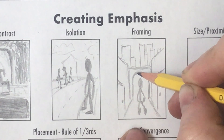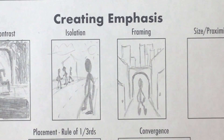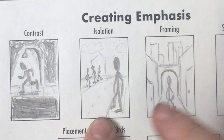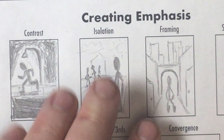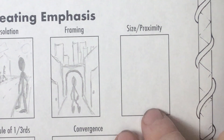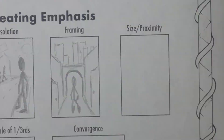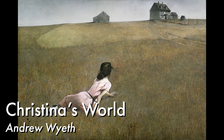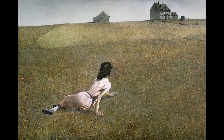Moving on to the next box — we're talking about size or proximity. We've kind of already seen that in the isolation example, where the larger, closer figure felt separate from everything else. But let's focus strictly on size and proximity. To understand this, let's take a look at Andrew Wyeth's painting titled Christina's World. Just looking at this painting, this girl feels very far away from that farmhouse, and it feels like it will take her a long time to get back — especially because we see that she is crawling or pulling herself with her hands.